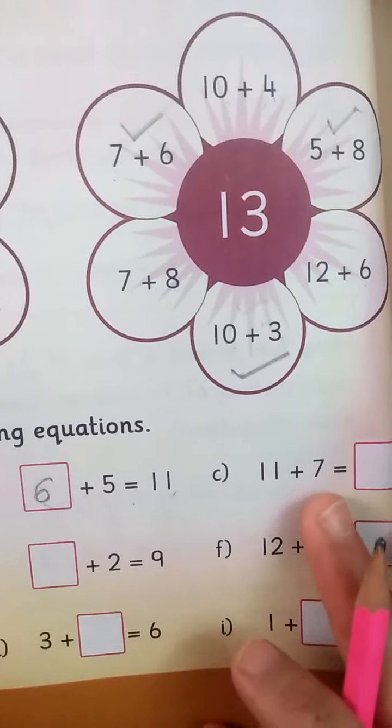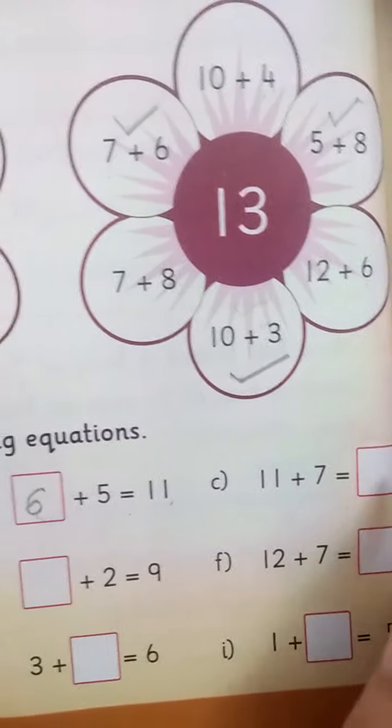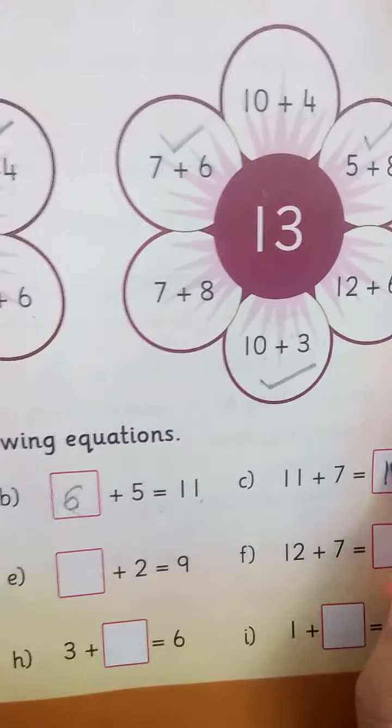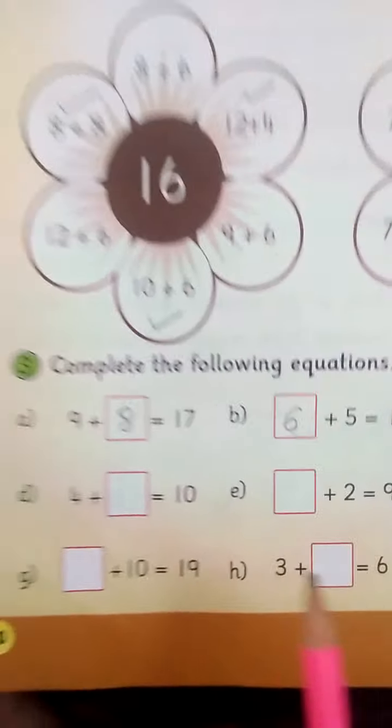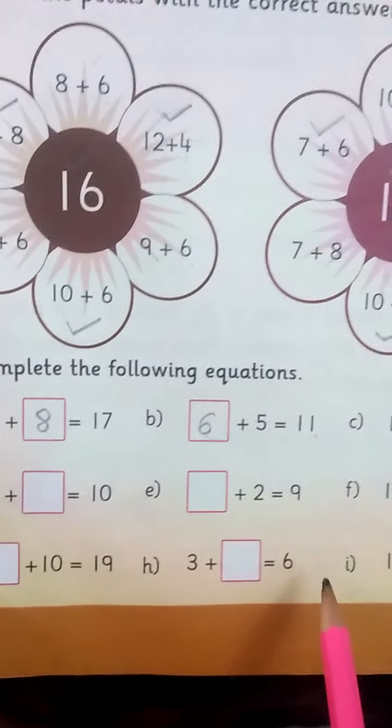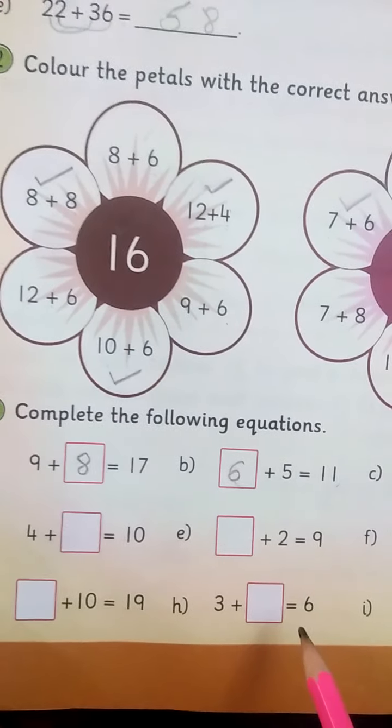11 plus 7 is equal to 18. Class, the remaining questions you have to solve in the same way, is it clear?